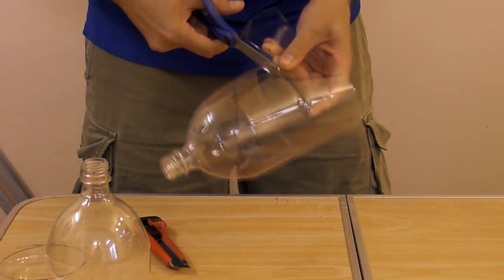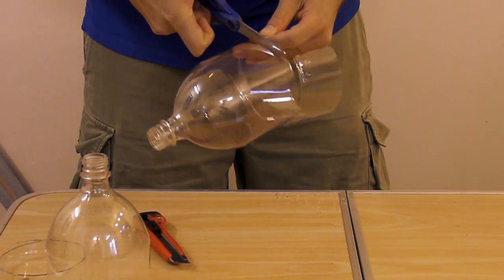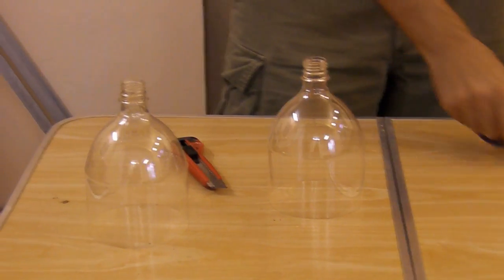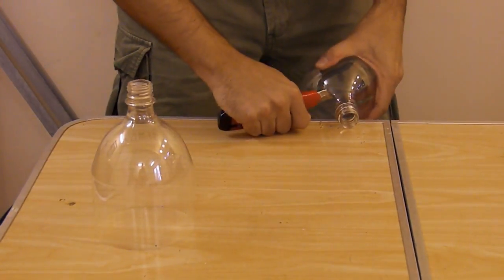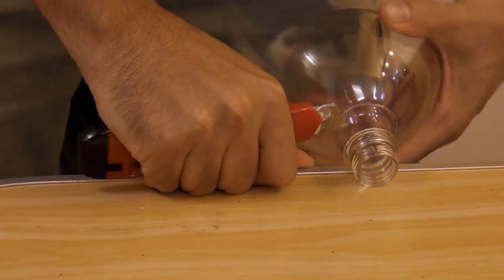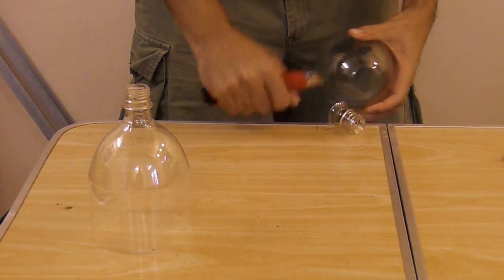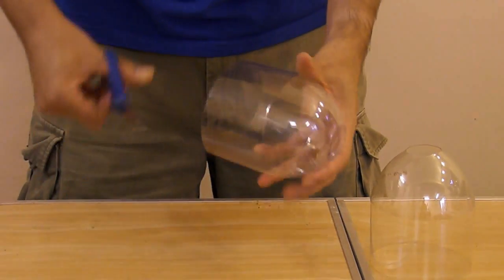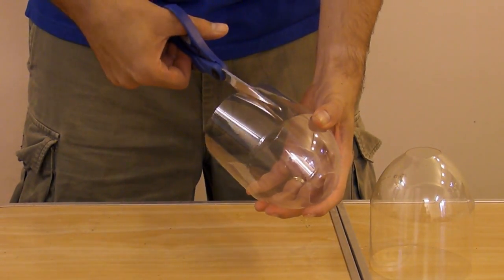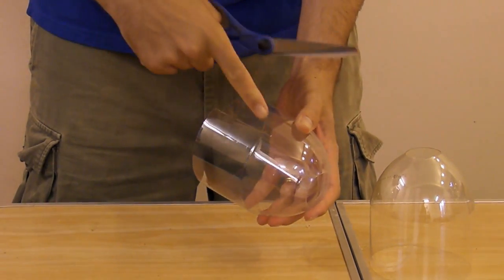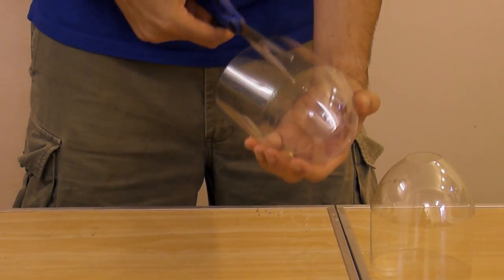And do that to both bottles. Now you need to cut off the neck of the bottle. And do that to both bottles. Get your reinforcing sleeve and cut just past this little ridge. It's important. Cut it into about thirds. And one more, just past that little ridge. And do that to both.